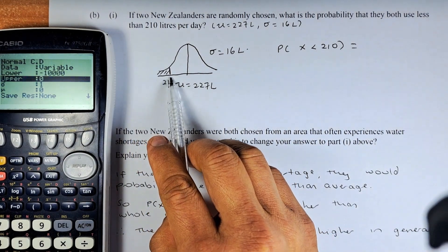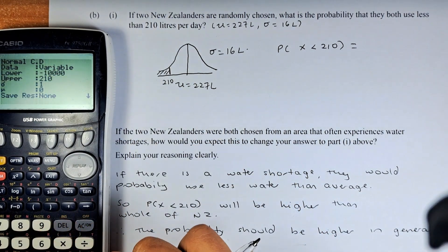Upper is where it is going to end. It is going to end at 210. So it will be 210. Execute.